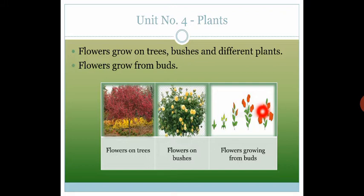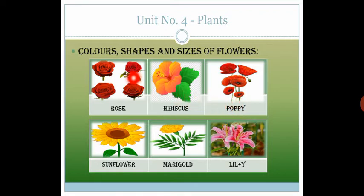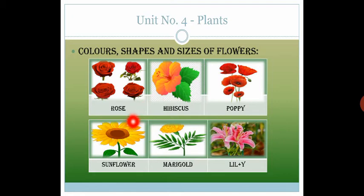Flowers make a garden look beautiful. Your garden will have flowers of different colors, shapes, and sizes, making it very lovely. Some flowers have many petals and others have only a few. Some petals are small in size and some petals are large in size.